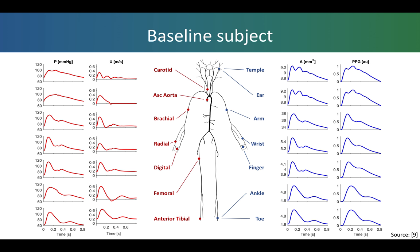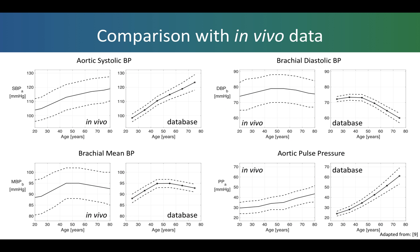We extracted hemodynamic parameters from all of the pulse waves in the database and compared them to in vivo data. These plots show comparisons between in vivo blood pressures on the left of each pair and blood pressures from the database. We found that the trends in blood pressure with age were similar between the two, and in addition the absolute values were also mostly similar.